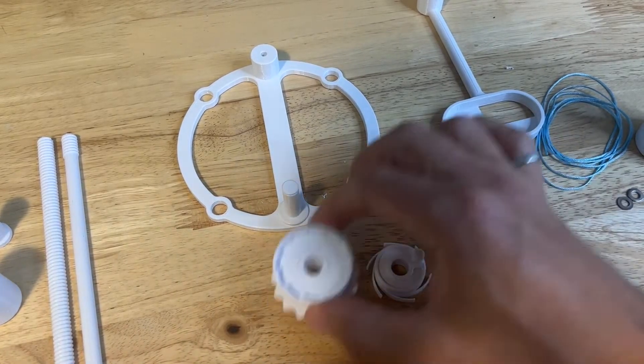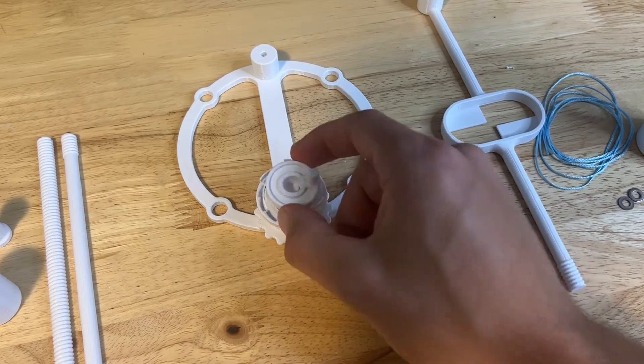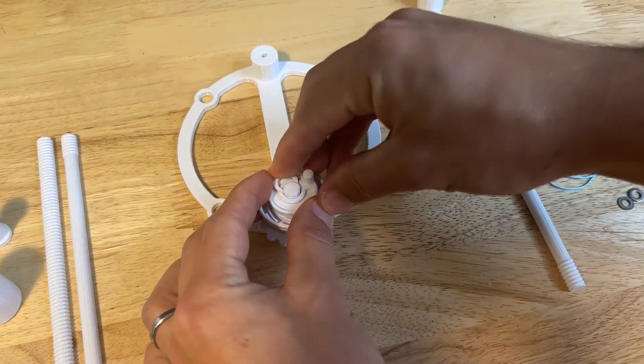Next, grab your spool, pop that onto the post on the base, followed by the pin wheel. And then use a c-clamp to secure everything in place.